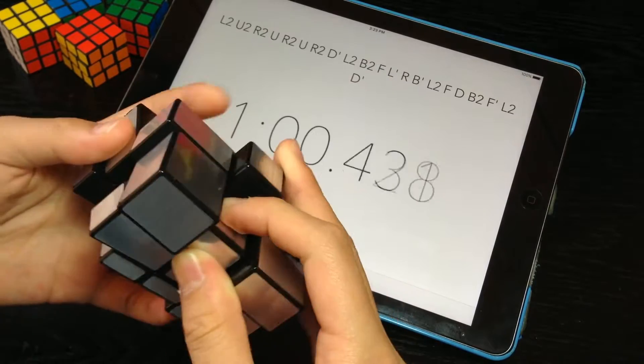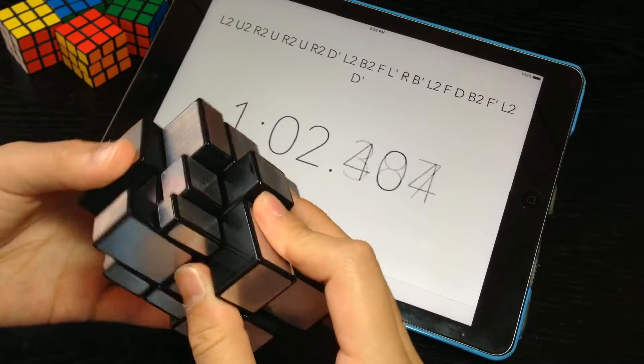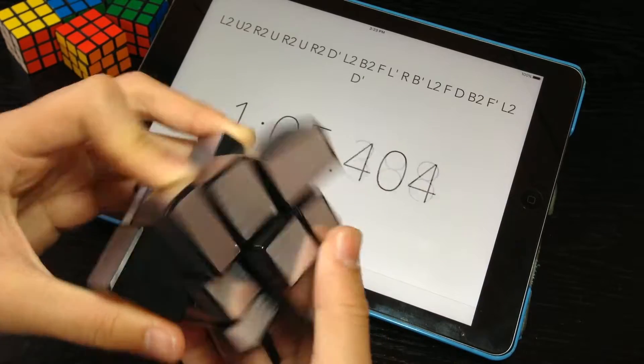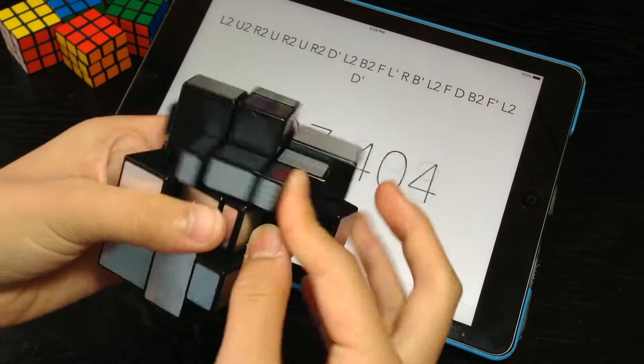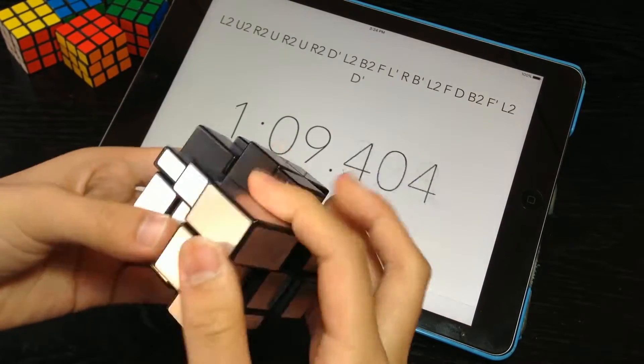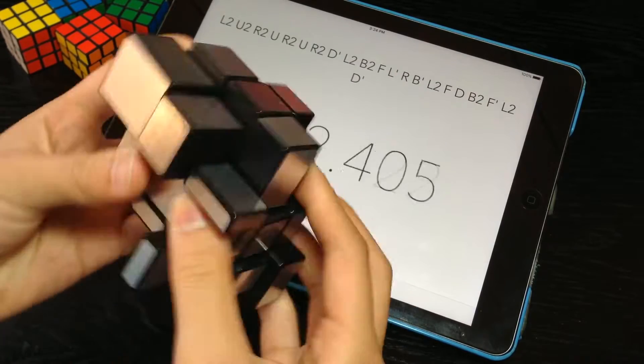Then there was 2x2, 5x5, 6x6, 7x7, Pyraminx, Skewb, Megaminx and Square-1. Events like feet and clock weren't included. So in terms of money the best world record to get would either be the 3x3 single or average.